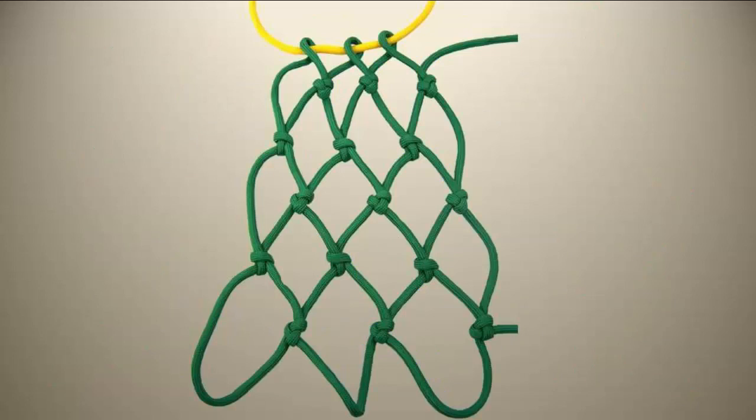If you examine a piece of diamond mesh netting, you will notice that the knots in every other row look the same. The odd numbered knot rows look alike and the even numbered knot rows look alike. However, the two rows next to each other do not look alike.